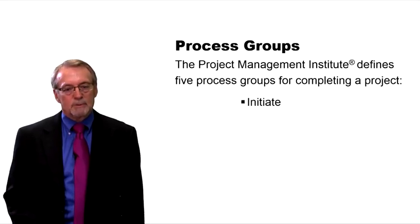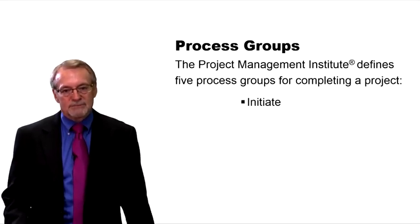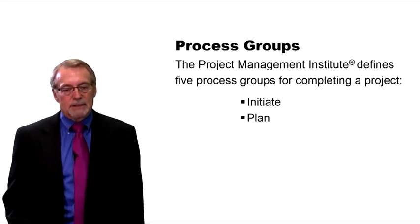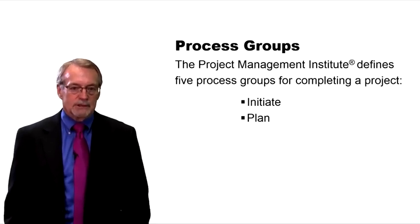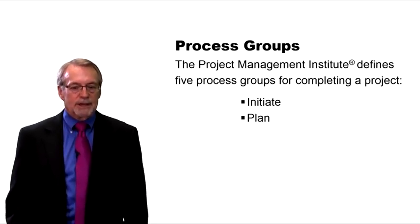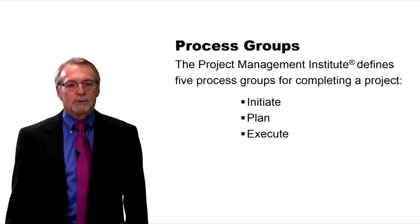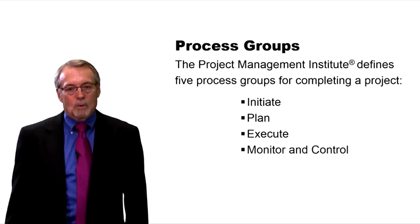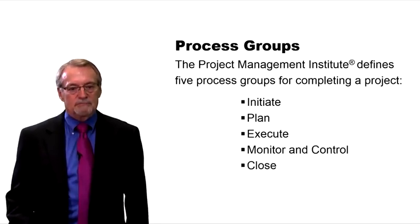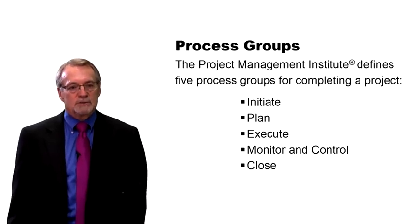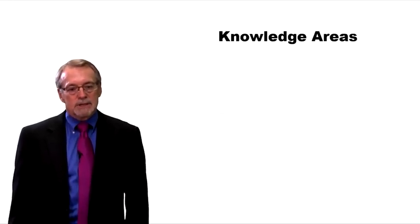There are five process groups that PMI lays out for doing projects. The first is initiating — starting and clearly defining the project. Then planning — putting together a plan on how we'll accomplish what was defined in initiating. Then executing. While executing, we monitor and control to keep things on target with schedule and budget. Finally, we close out the project. There are a number of processes within each of these major areas.